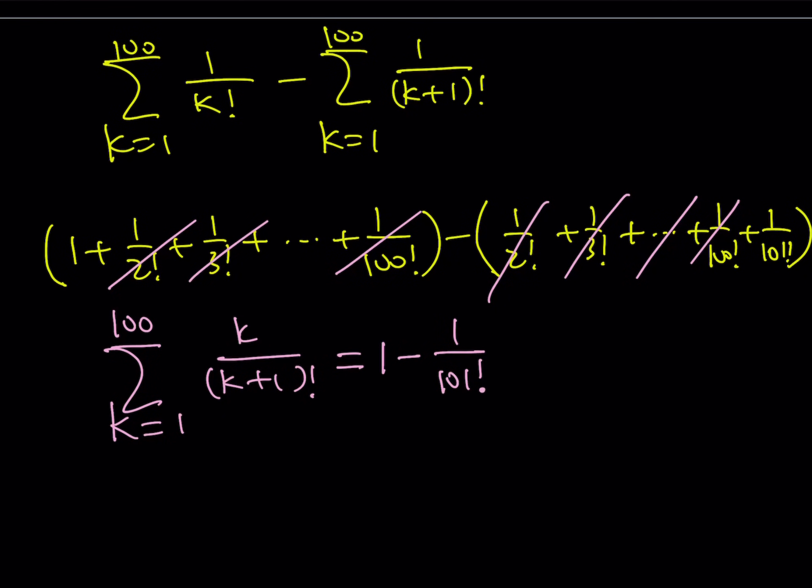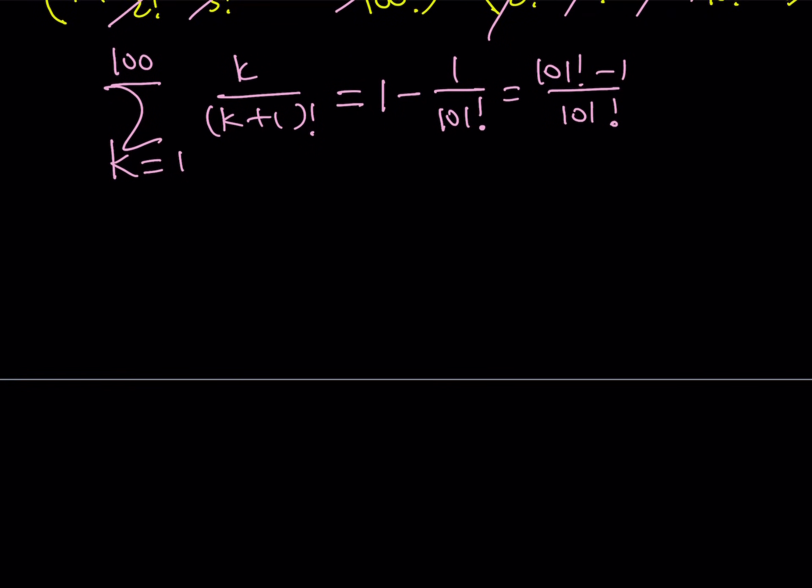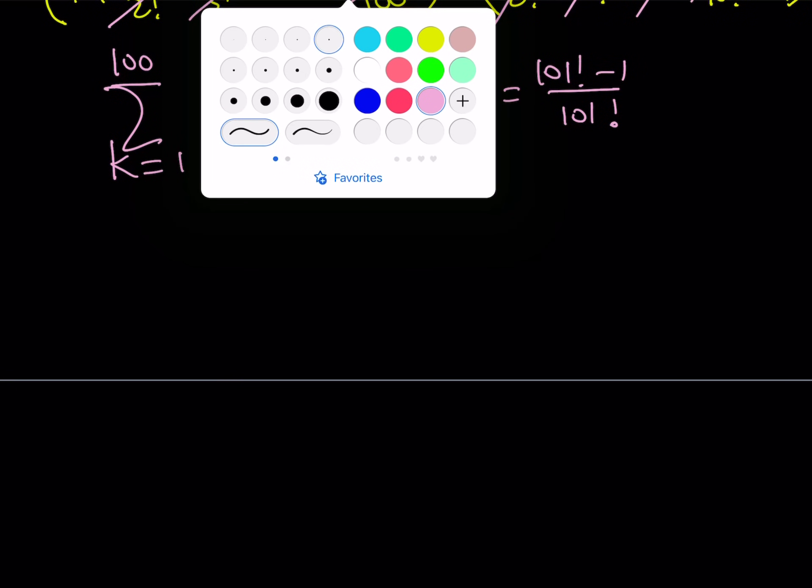Obviously, you can make a common denominator and write it as 101 factorial minus 1 divided by 101 factorial. And basically, you can write it like this. And this is going to be very close to 1 because 1 over 101 factorial is a very small number. So, if you subtract it from 1, you're going to be very close to 1. And this brings us to the end of this video.